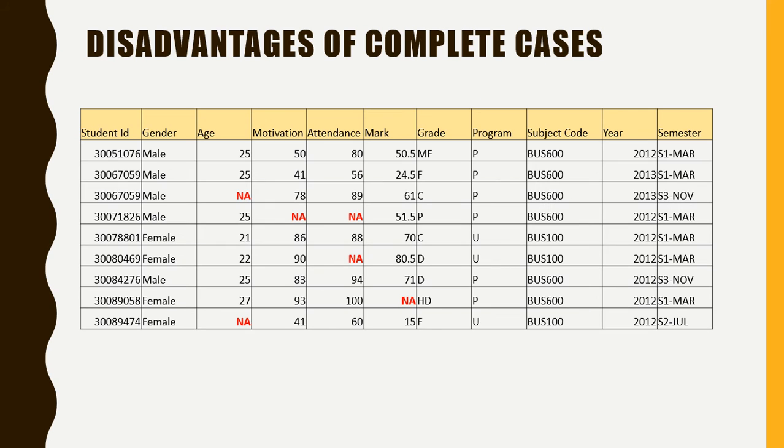Although complete cases is one of the easiest ways to deal with missing values, it still has some disadvantages. For example, consider this dataset. The dataset contains a total of nine observations, of which five are incomplete cases. That is, five cases of the nine cases contain missing values. So if I want to consider only the complete cases, we are extracting four cases out of the nine cases.